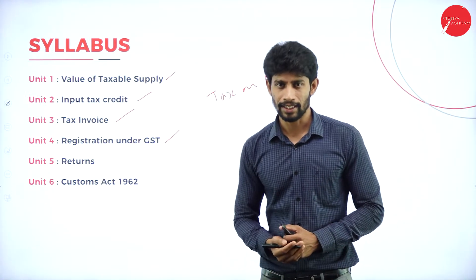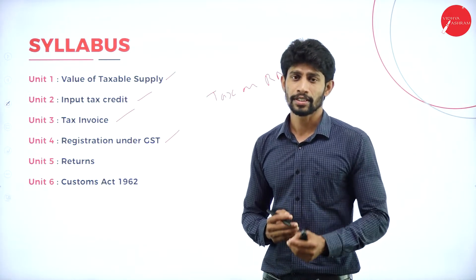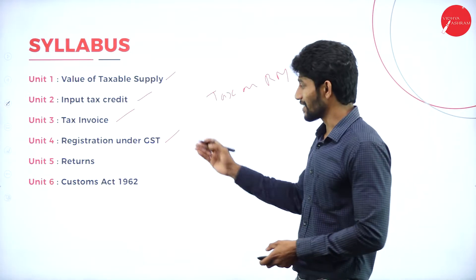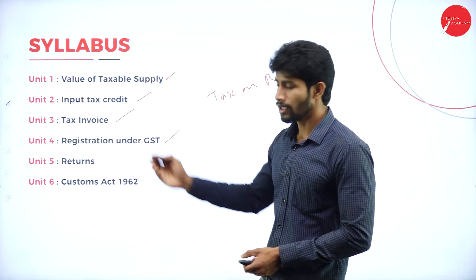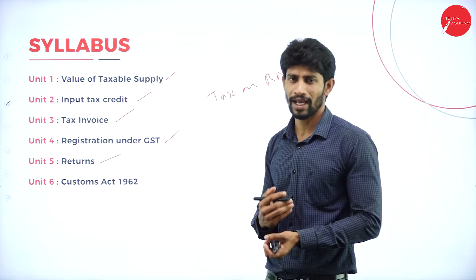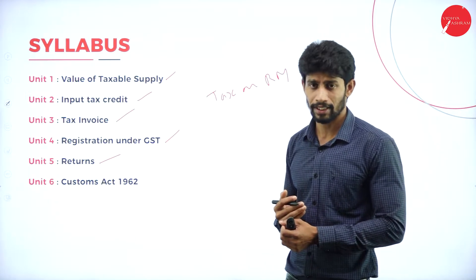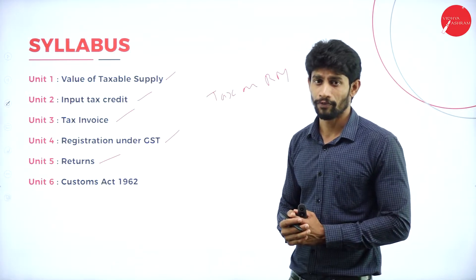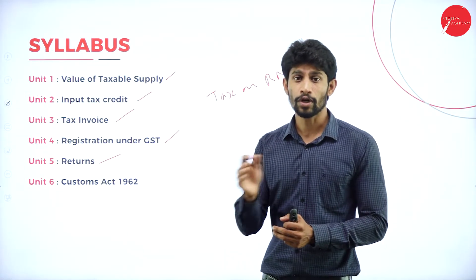Unit 4 deals with registration under GST. If you want to be a legal supplier, you must register under the GST Act. We'll study the procedure for registration, the types of registration, and the documents required. Unit 5 deals with returns — the different forms under GST such as GSTR 1, GSTR 2, and GSTR 3, and which form applies to which kind of transaction.